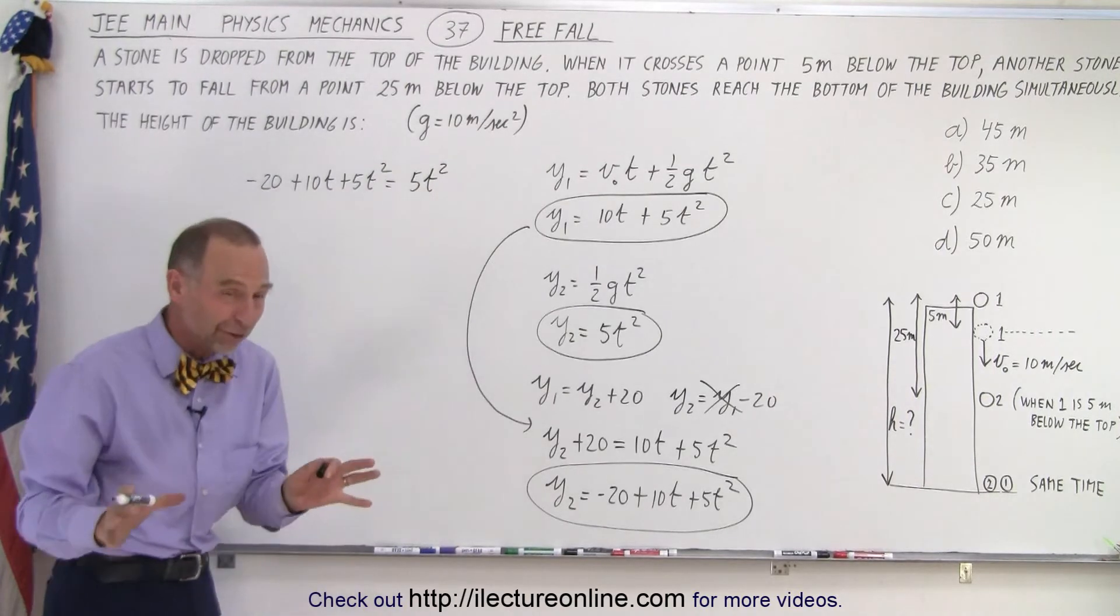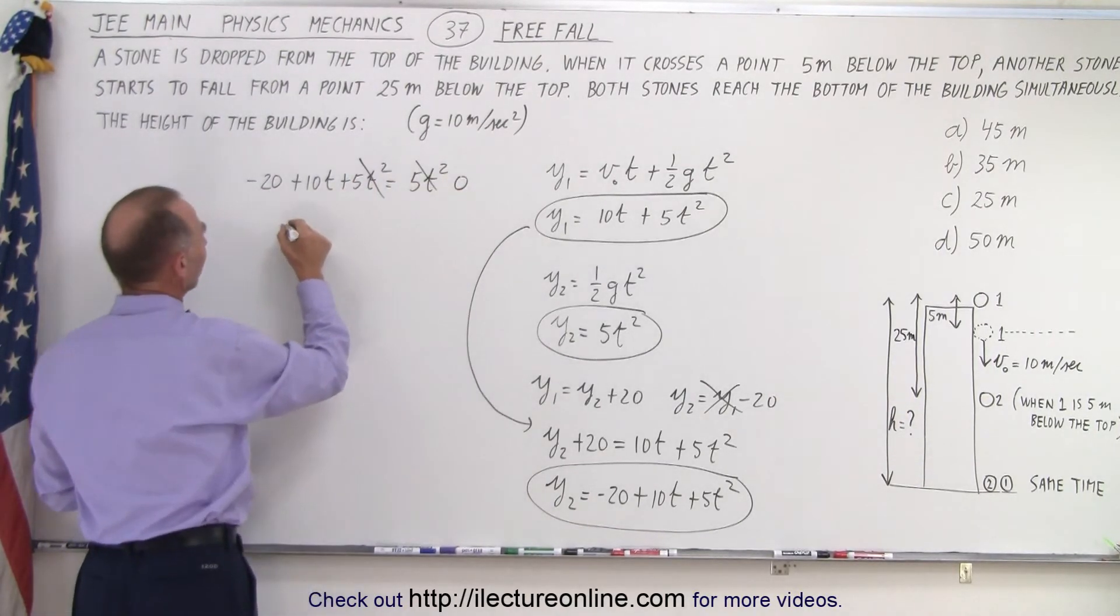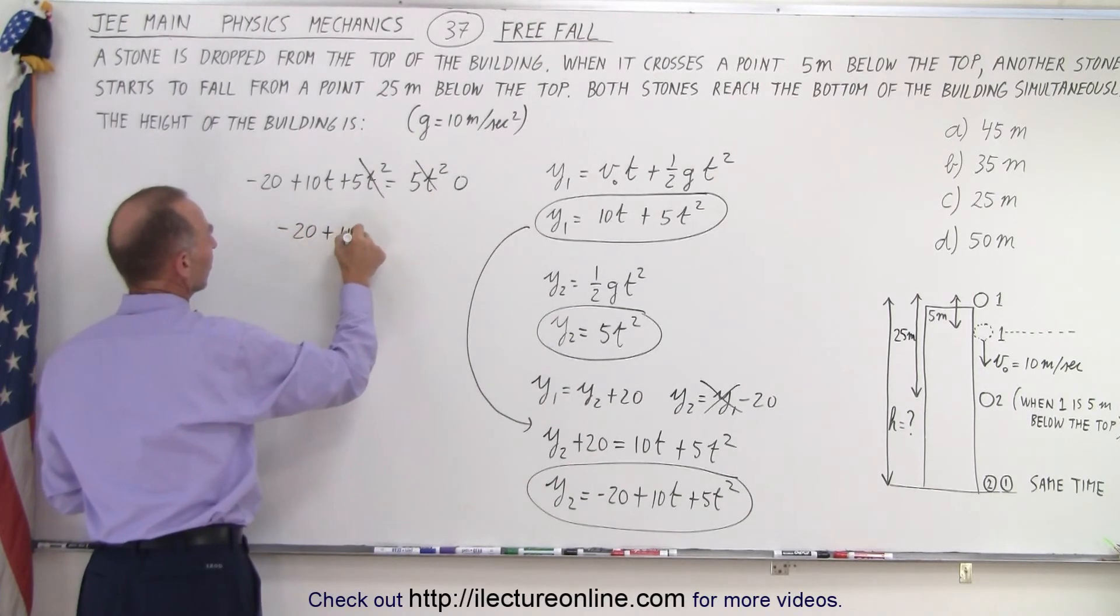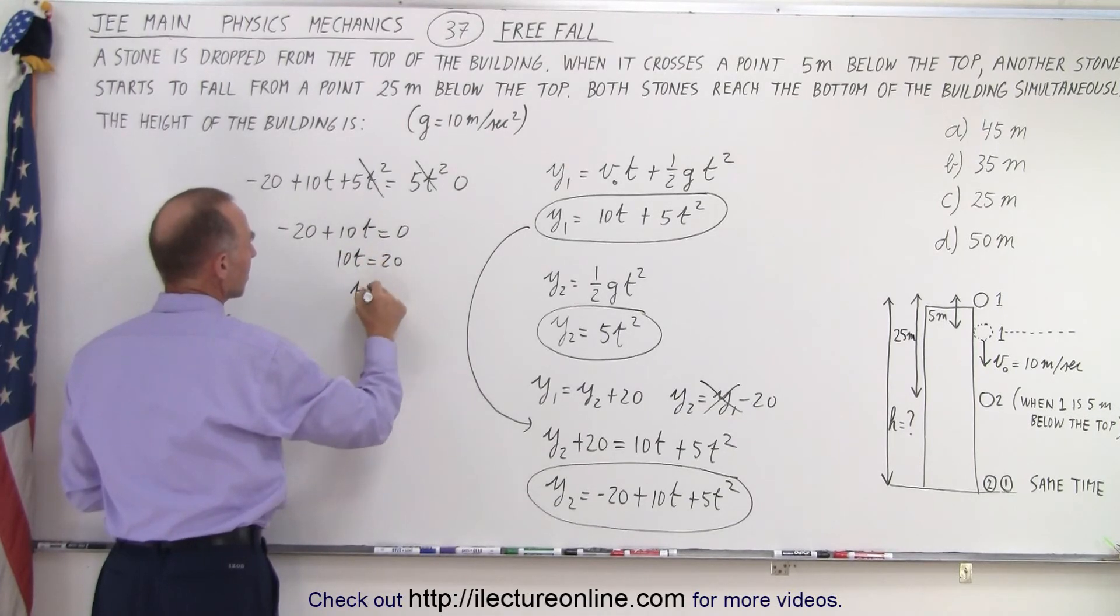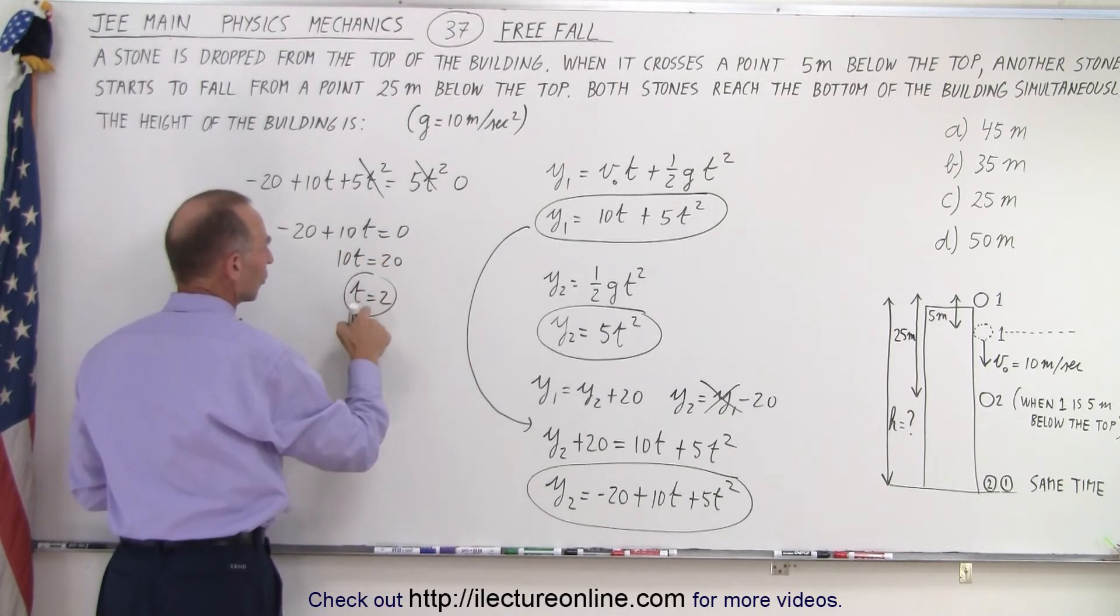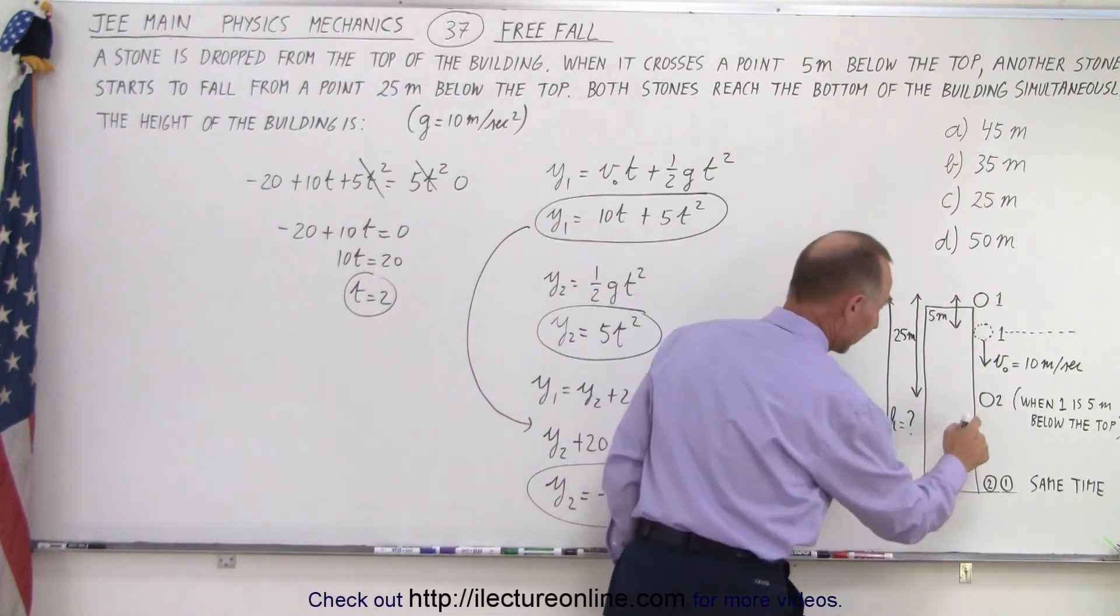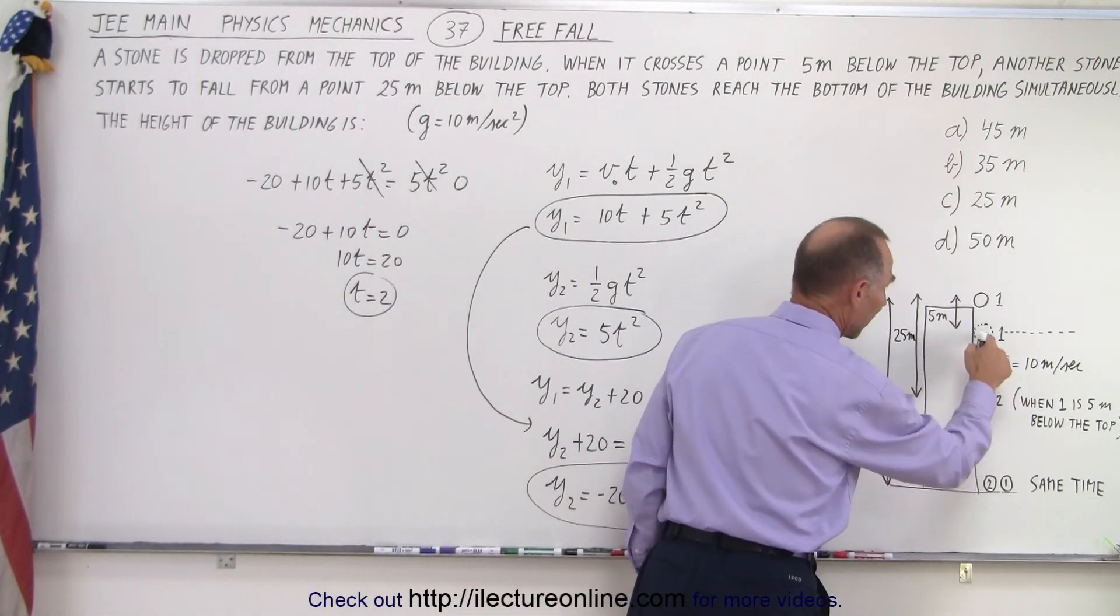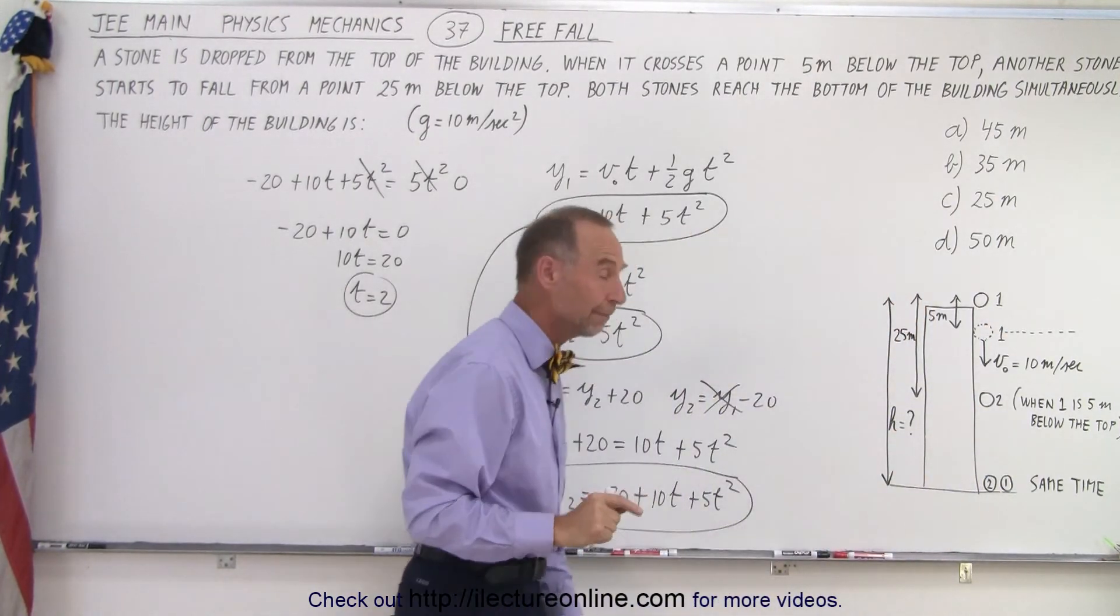And notice that right away, on both sides, we have a 5t squared, which cancels out. So, this becomes zero. We have minus 20 plus 10t equals zero. 10t equals 20. t equals 2. In other words, two seconds have elapsed from the time that this rock is dropped and from the time that this rock reaches this point. Two more seconds before both of the rocks are down.